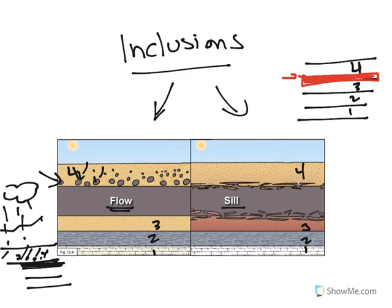Unlike the lava flow that formed on the surface, the sill injects itself in between those two layers. When it does so, it rips up bits and pieces of layer 4 and includes them, and bits and pieces of the top of layer 3 as well. That's why we see these inclusions from both layers 4 and 3. Understanding the differences between the left and right picture can help you untangle the geologic history of specific areas.